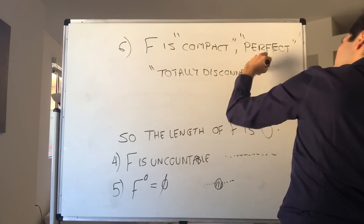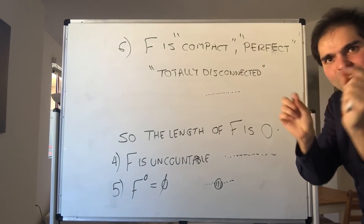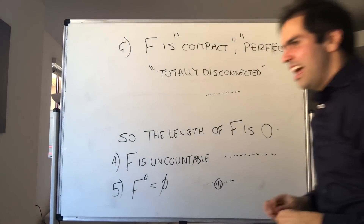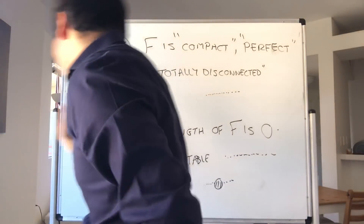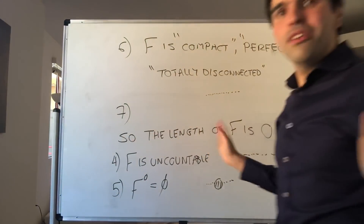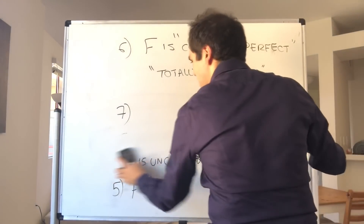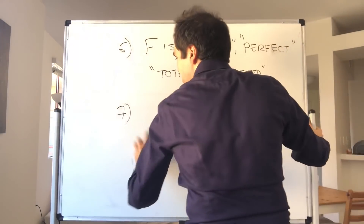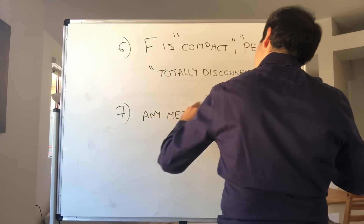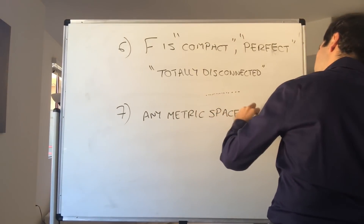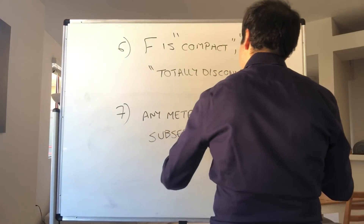Totally disconnected really means it's very disconnected — there's no sub-interval in that Cantor set. Also, it turns out that in some sense, any metric space is actually a subset of the Cantor set. It can be thought of as a subset of the Cantor set. Very weird.